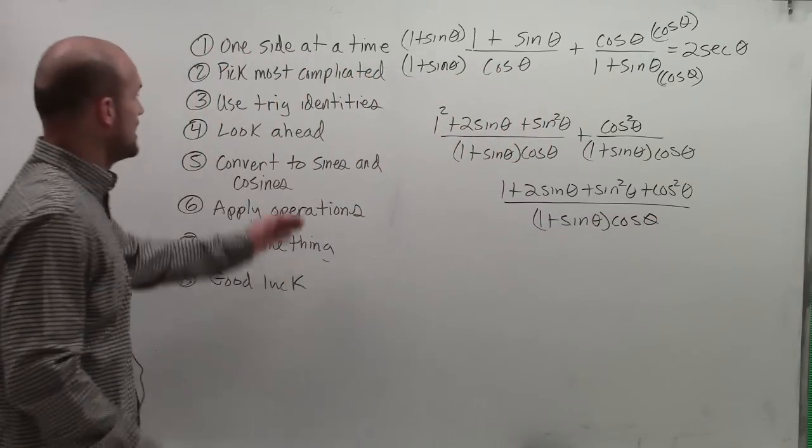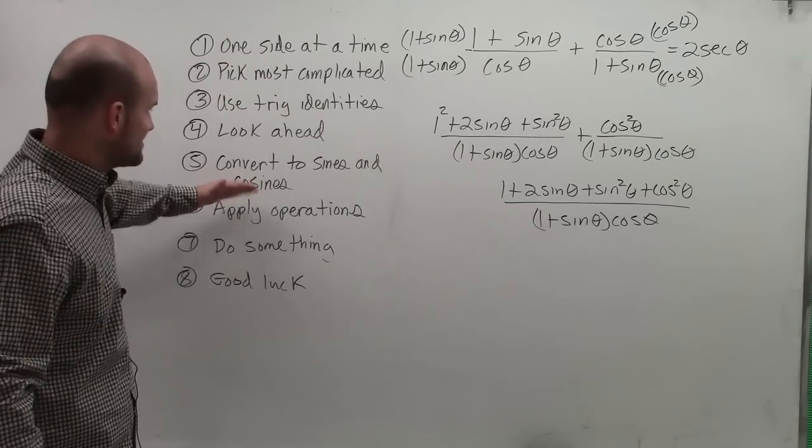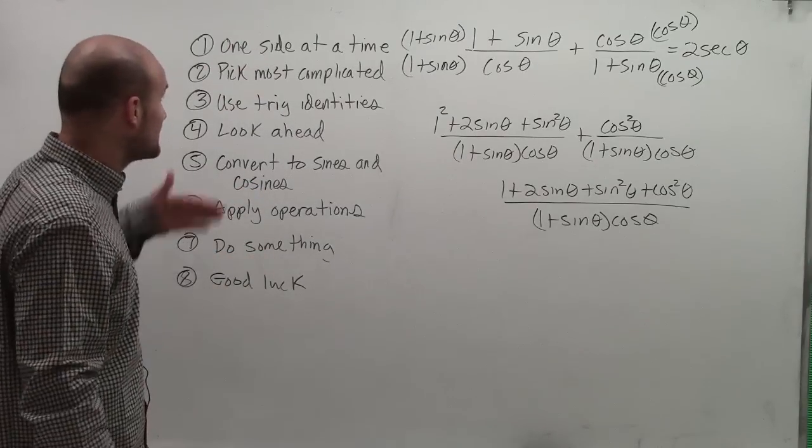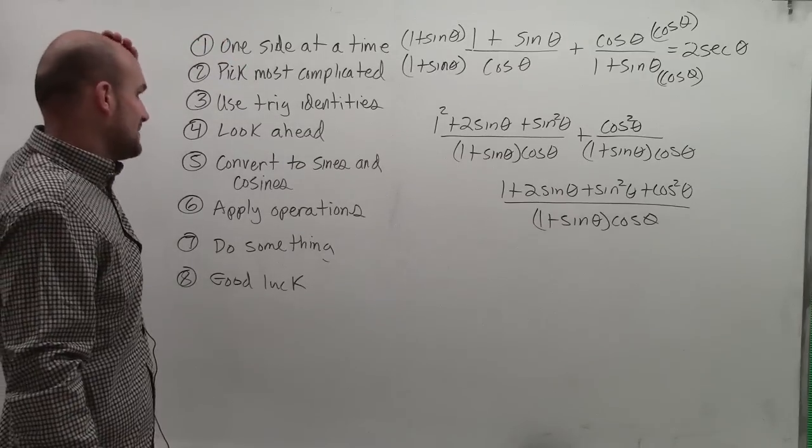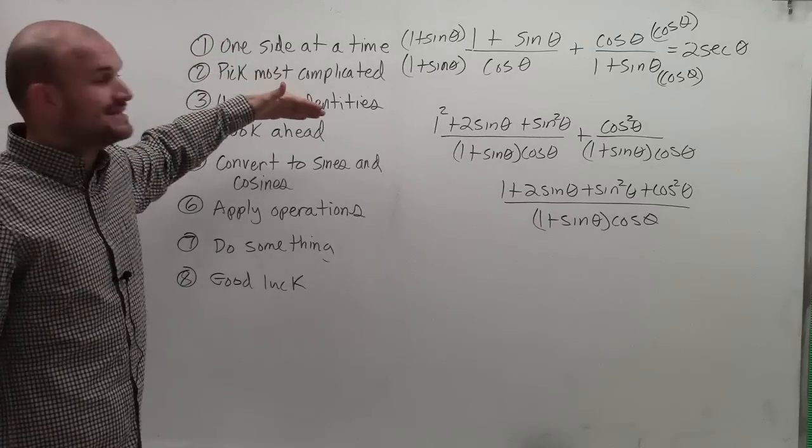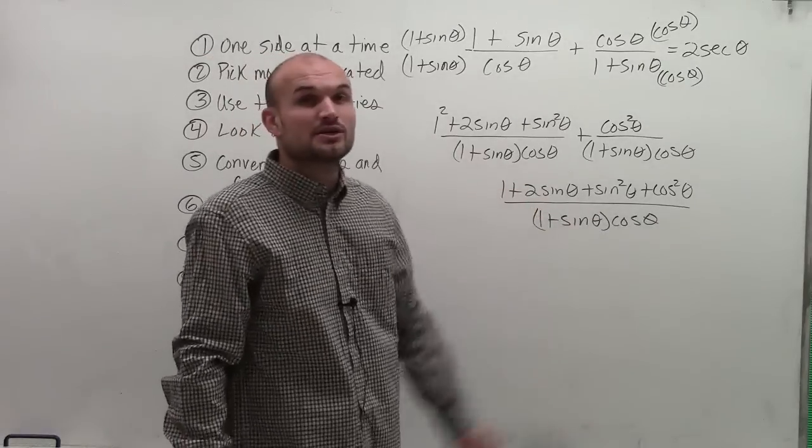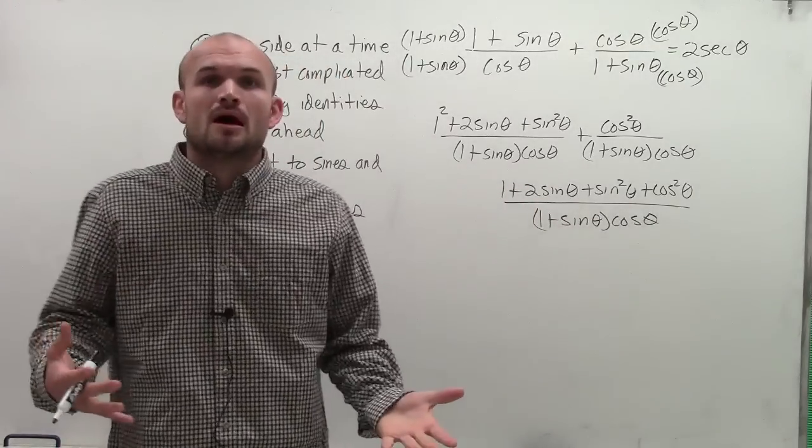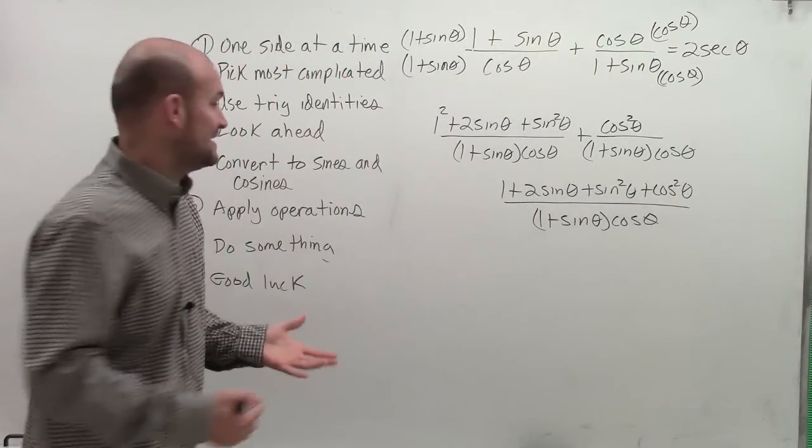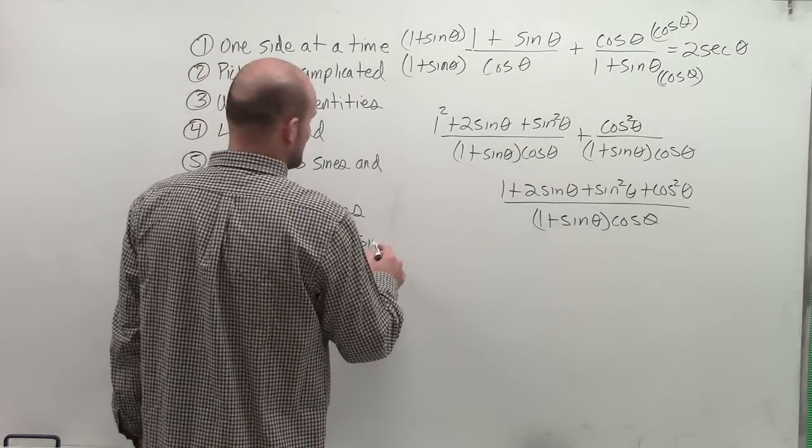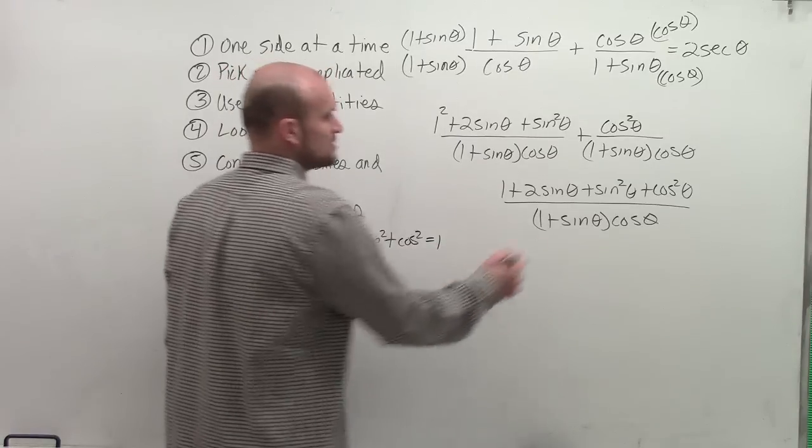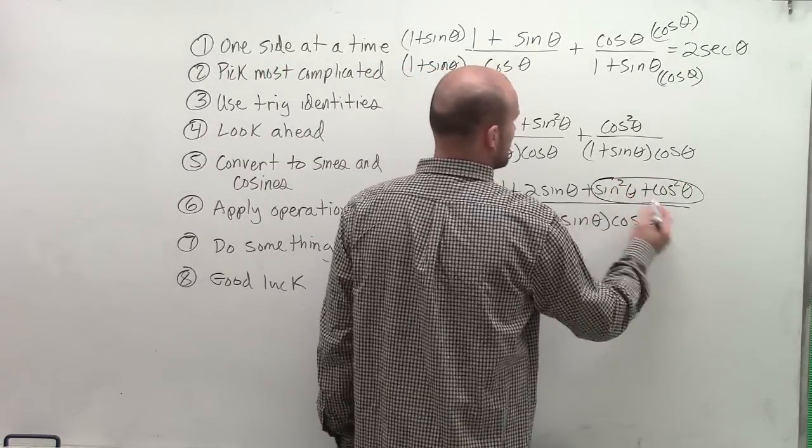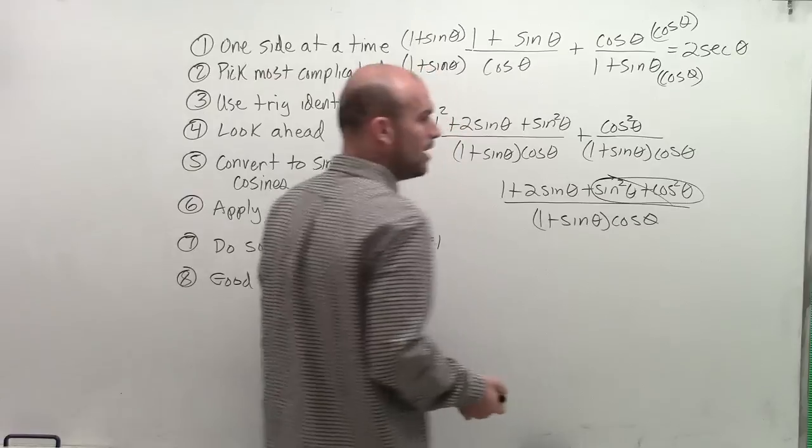So let's go back through now. So we have applied our operations, and we did something, right? So we're still working on one side. We're working on the most complicated side. But now we have some trigonometric identities that we can apply because we have sine squared and cosine squared. And we always want to use our Pythagorean identities when possible. So the Pythagorean identity says if you have sine squared plus cosine squared, that equals 1. So what we notice right here, that's now equal to 1.